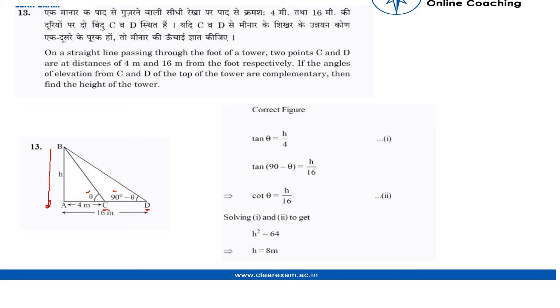So now we have to find the height of the tower. The relation we want to apply over here is between the perpendicular, which is the height, and the base, which is given to us. So applying tan theta would give us h by 4.